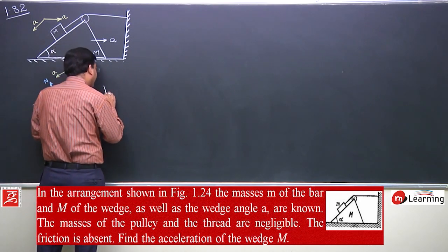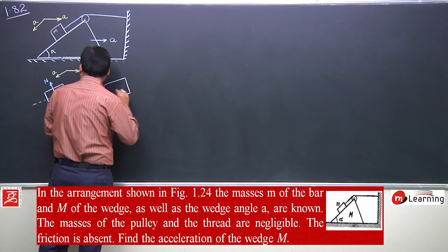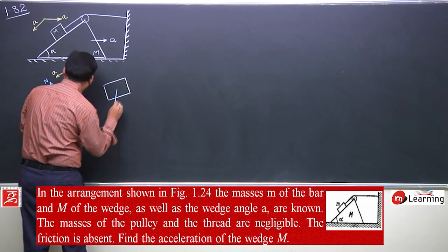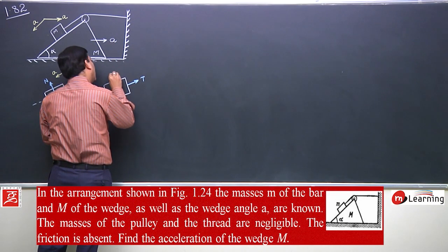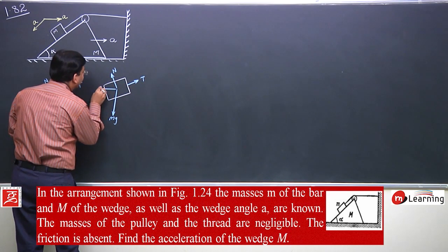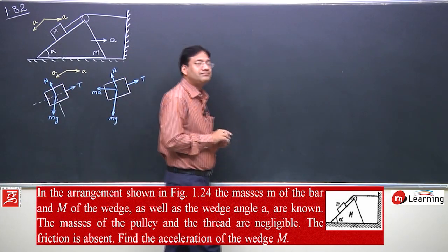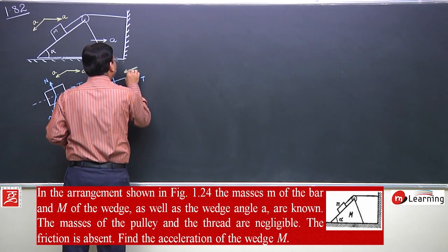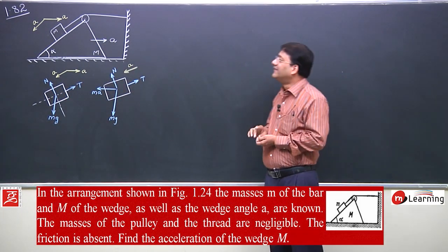I am redrawing this free body diagram once more. I will indicate mg as before, tension T as before, normal reaction N as before. In addition, I will show a pseudo force — opposite to the acceleration — of magnitude mA, and that force is along this wedge, along the incline.